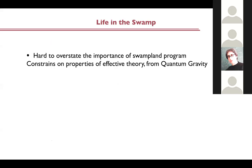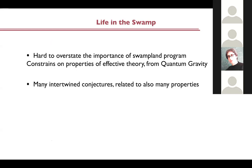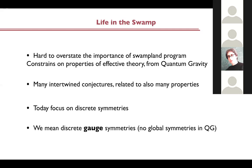As a general introduction, it is very hard to overstate the importance of the Swampland program, as I guess everyone is aware of. It concerns effective theories from quantum gravity, so it goes to very deep questions in physics. There are many different conjectures which are related in many different and interesting ways, and which are related to many properties of effective theories and UV theories. Today I will focus on a class of such properties which are related to discrete symmetries. And because in quantum gravity we don't expect global symmetries to exist, I mean discrete gauge symmetries when I say discrete symmetries.